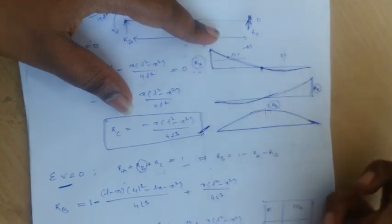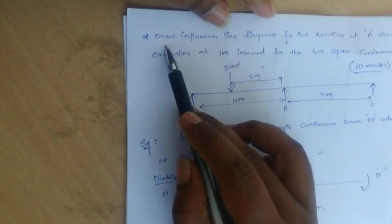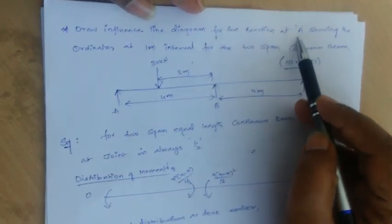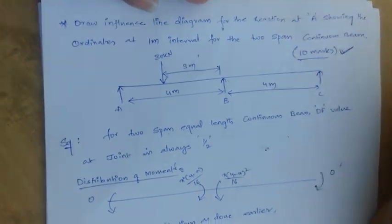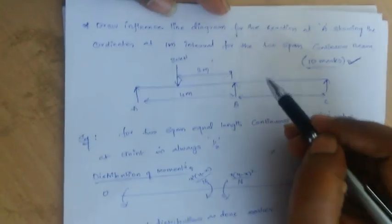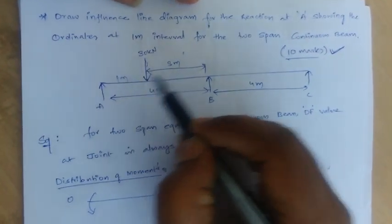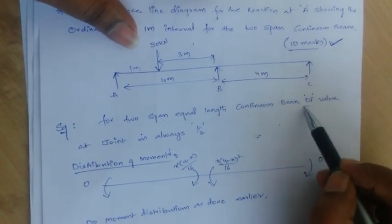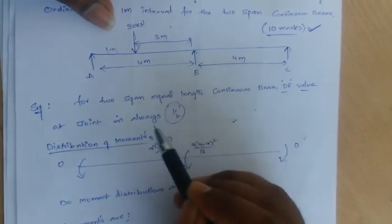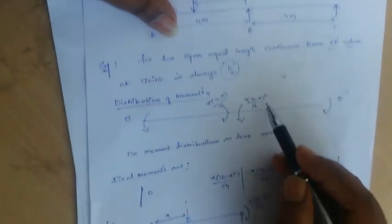As part of this, an example problem is presented. The question is: draw the influence line diagram for the reaction at A, showing ordinates at 1-meter intervals for a two-span continuous beam. This is typically a 10-mark question. The beam has equal spans and carries a 30 kN load at 1 meter from the left support and 3 meters from support B. The distribution factor is 1/2 as derived earlier.